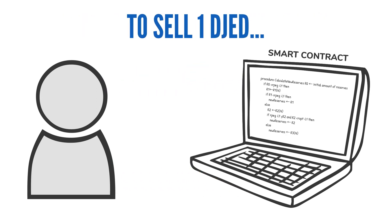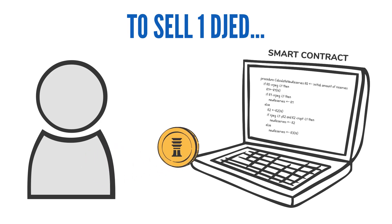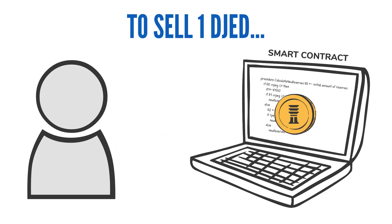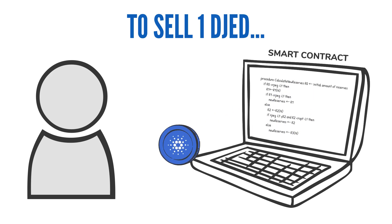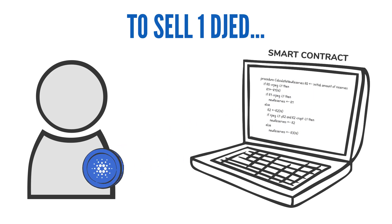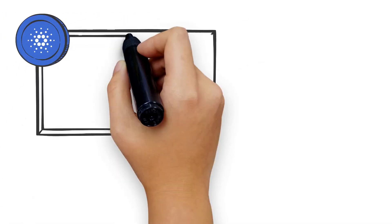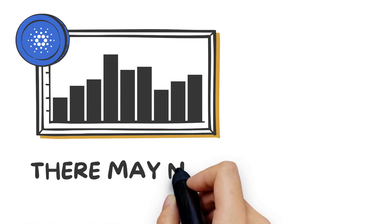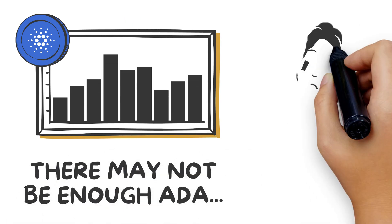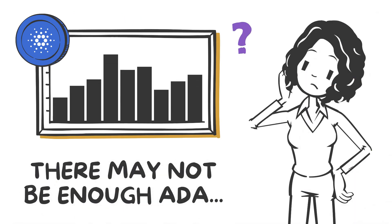If the user wants to sell one JED, he will send it back to the contract, which will then burn the JED and send back the amount of ADA that is equivalent to one dollar. As there might be a fluctuation in the price of ADA, there may not be enough ADA in the contract to give back to the JED holders.